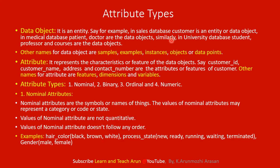So, if you have a student, that student is one of the entities. These are all examples of entities. In data mining, data objects can also be called by other names: samples, instances, examples, objects, or data points.